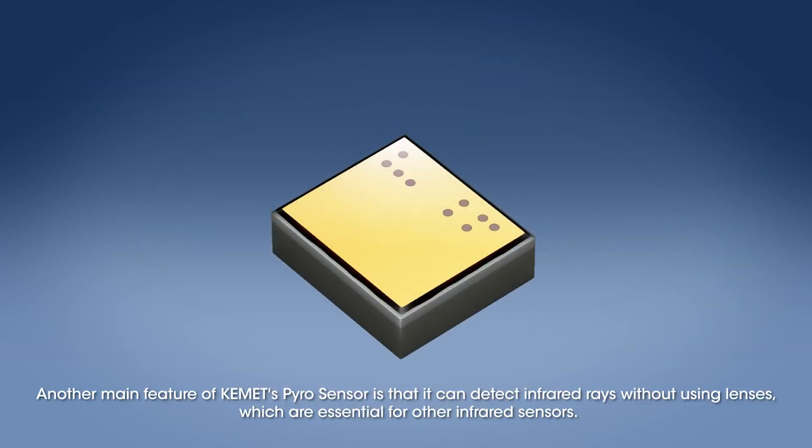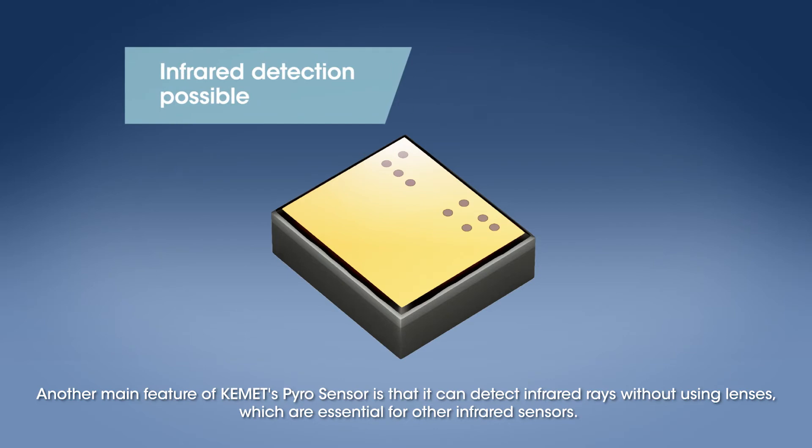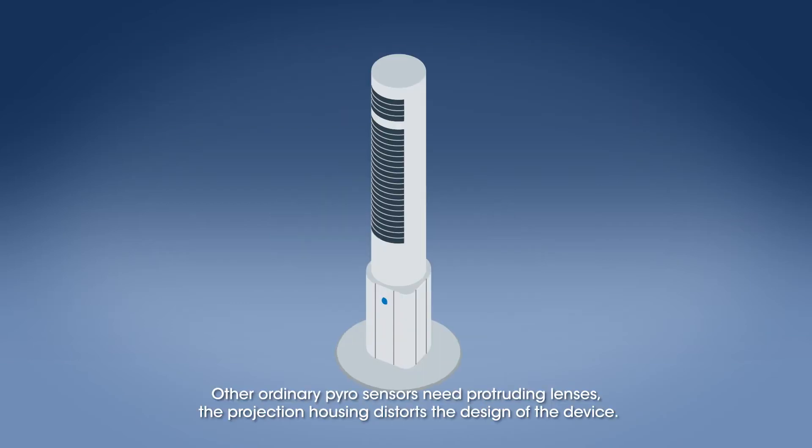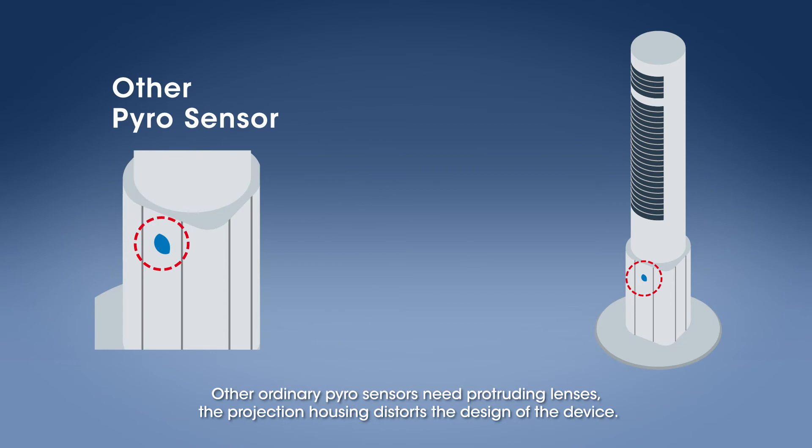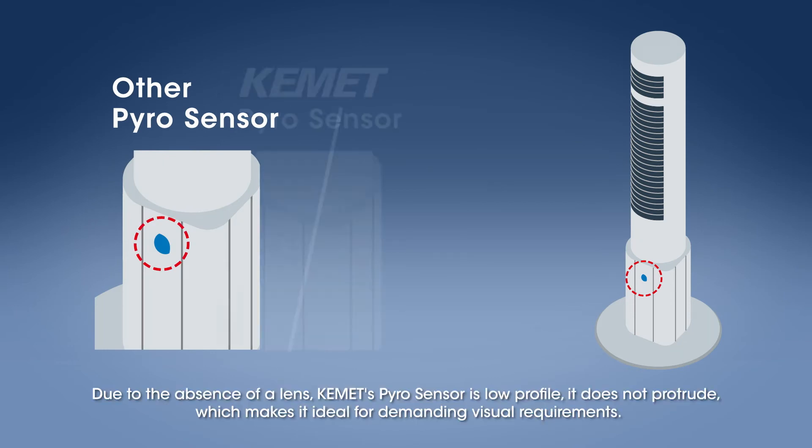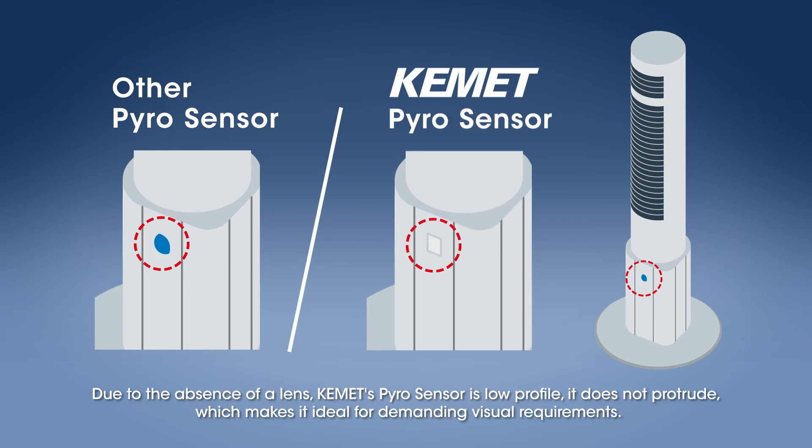Another main feature of KEMET's Pyro Sensor is that it can detect infrared rays without using lenses, which are essential for other infrared sensors. Other ordinary Pyro Sensors need protruding lenses. The projection housing distorts the design of the device. Due to the absence of a lens, KEMET's Pyro Sensor is low profile. It does not protrude, which makes it ideal for demanding visual requirements.